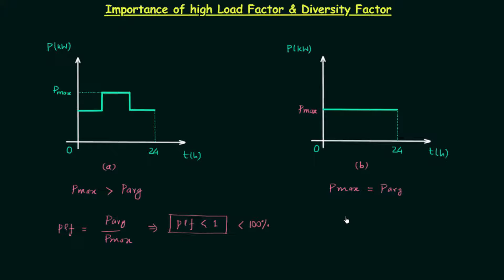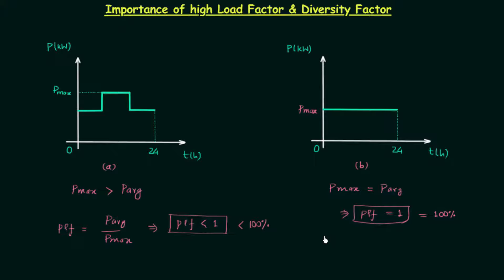In the second case, P_max is equal to P_average. This implies the plant load factor is equal to unity, or we can say it is equal to 100 percent. Now we will derive a few important conclusions based on these results.